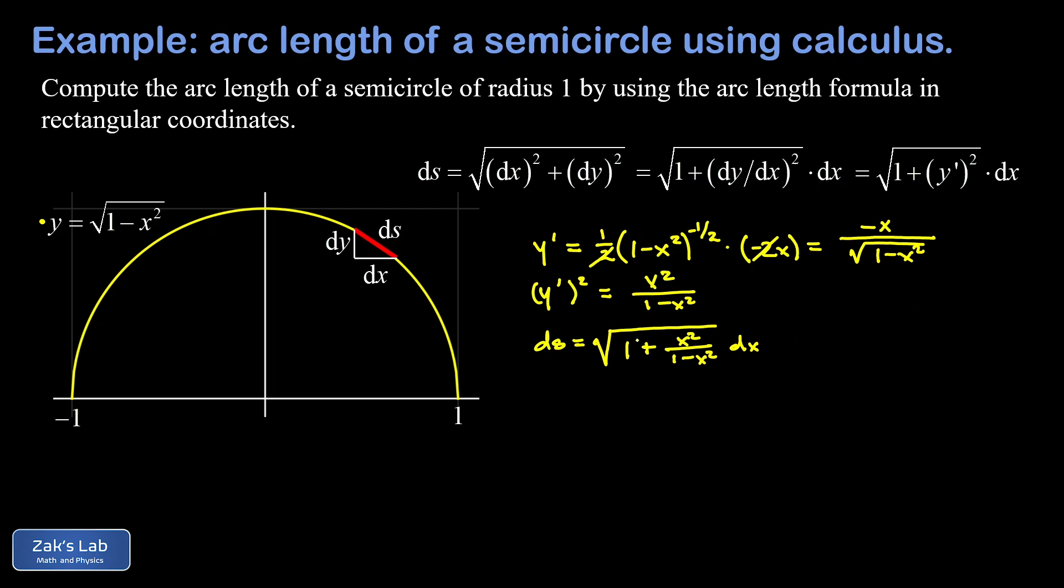Now we can clean that up by getting a common denominator. So this one over here, I'm going to multiply that guy by one minus x squared divided by one minus x squared. And then I can just add these two fractions together. So when I add the numerators, I'm going to get one minus x squared plus x squared, all divided by one minus x squared. And of course, these x squareds in the numerator are going to cancel out. And things are starting to get quite a bit simpler here. Now my ds has reduced to the square root of one over one minus x squared dx.